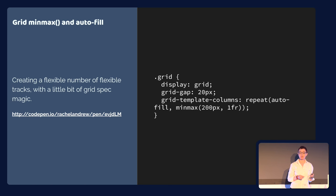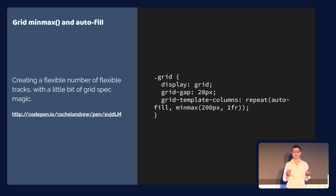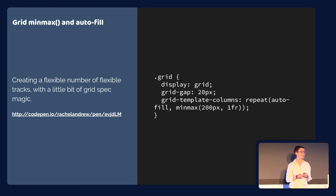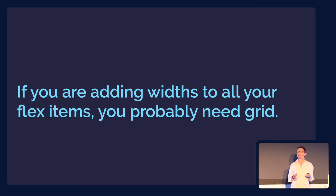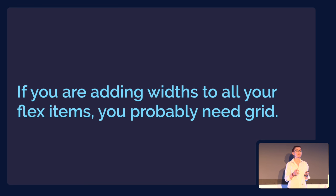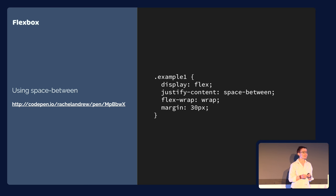Here's the code for that example. To make that grid layout I say display:grid, set some gaps with grid-gap, and then use grid-template-columns with repeat, auto-fill — fill as many columns as I can with a minimum of 200px and a maximum of one fraction unit. We're doing that on the container rather than on the items themselves.